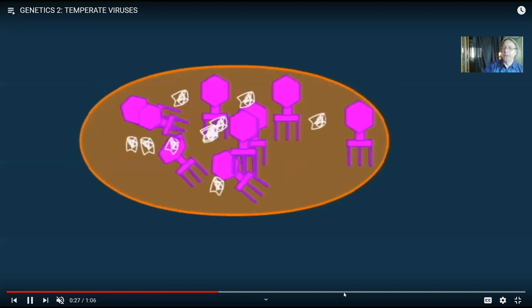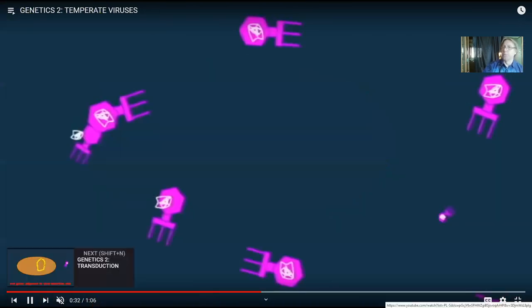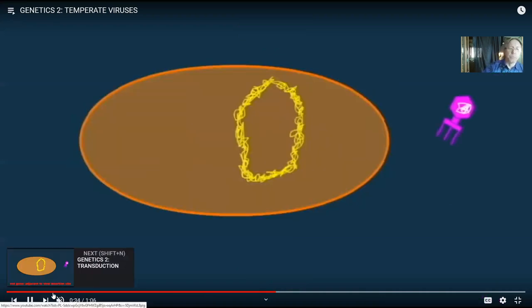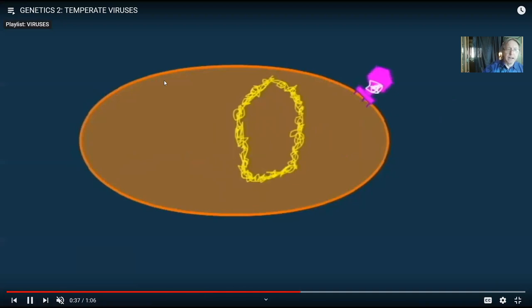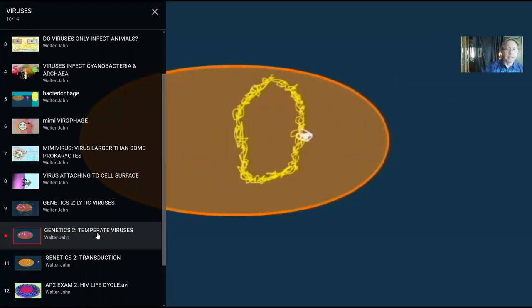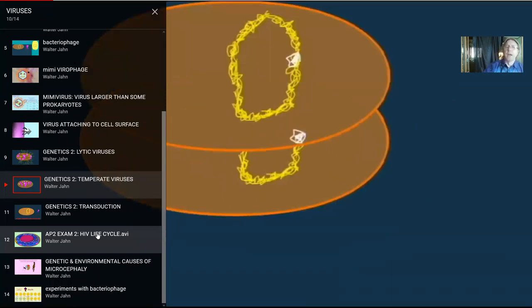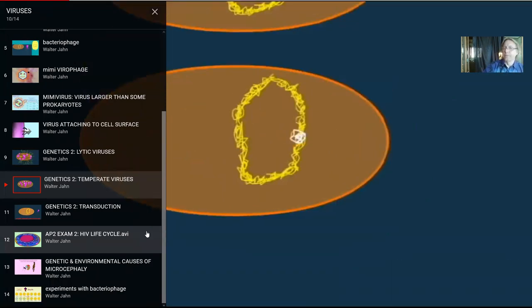Now, temperate viruses can become lytic at some point in the future. But the point is, they can more or less hide inside the host chromosome and replicate that way. And there are some viruses which infect humans that way.